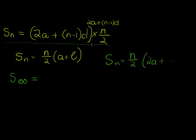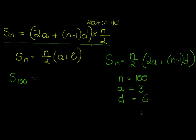So n is equal to 100, a we also have—a is the first term, which remember was 3—and d we also have, that's the constant difference, which is 6. So all I do is substitute: 100/2 × [2×3 + 99×6].